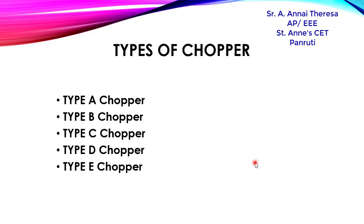We are going to see another classification of choppers based on the output voltage and output current. We have five types: Type A, B, C, D, and E.